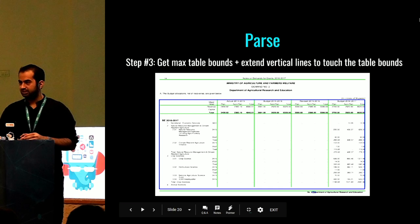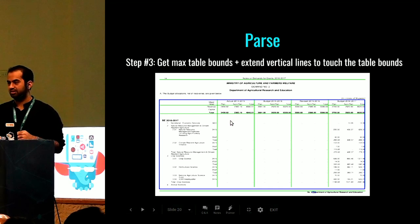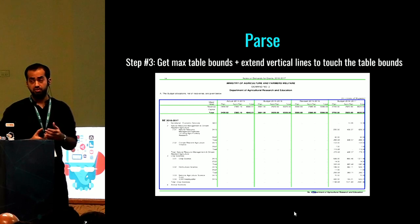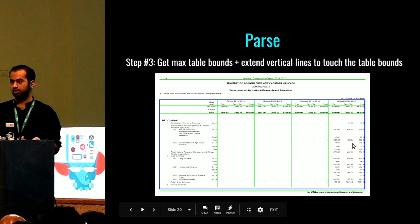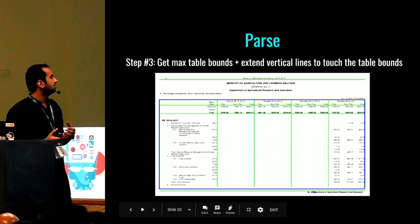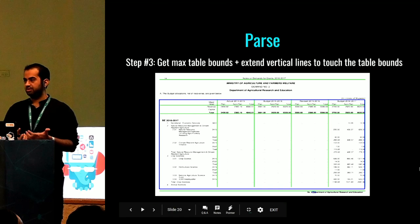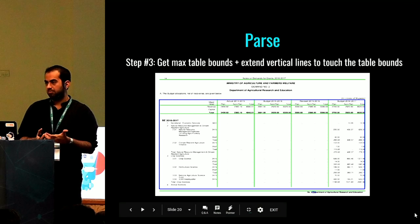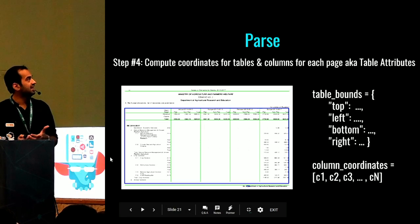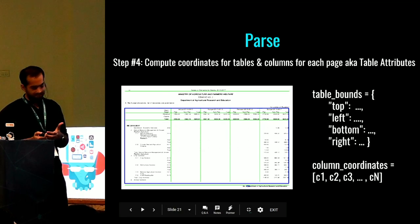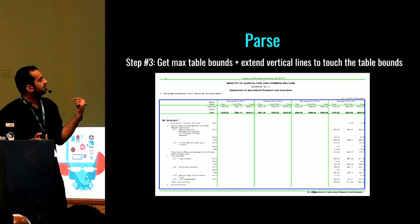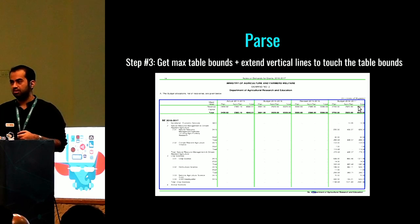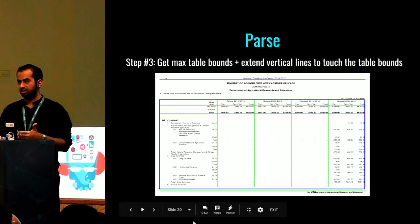Once we have drawn the lines, we try to detect the largest contour. This happens using OpenCV, a popular Python library for computer vision. We detect the biggest bounding box possible — the largest rectangular contour present — and that gives us the table boundary. We also extend the vertical lines to touch the table boundaries to ensure the whole table structure is in place.